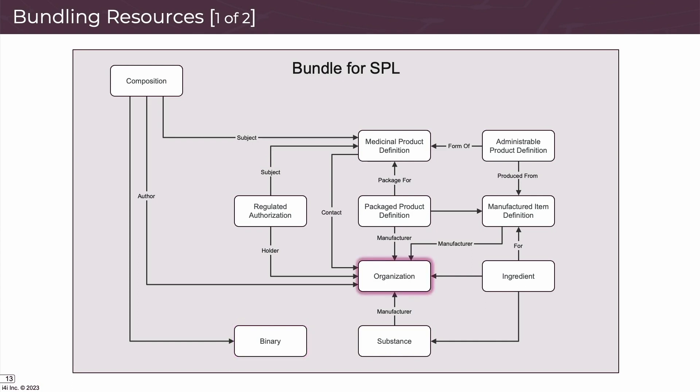The organization resource is like the labeler and manufacturer section in SPL. The medicinal product definition holds the high-level product information: the brand name, generic name, dosage form, product code, and route of administration. Each medicinal product can contain one or more administrable products. The administrable product describes the route of administration and characteristics of the product when it comes to final dosage form — after any mixing or transformations have been done to it. This information isn't currently included in SPL coding, and this resource isn't required in FHIR EPIs.